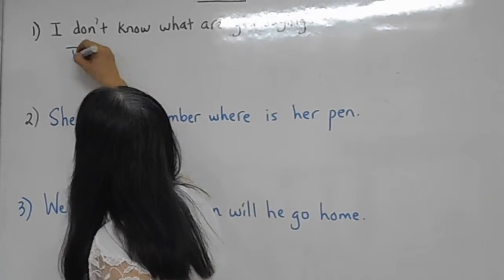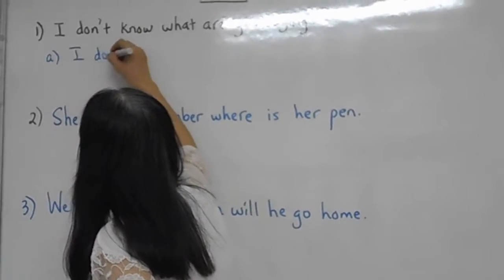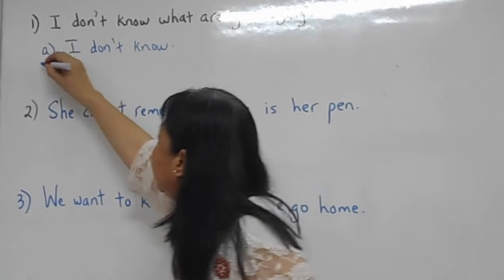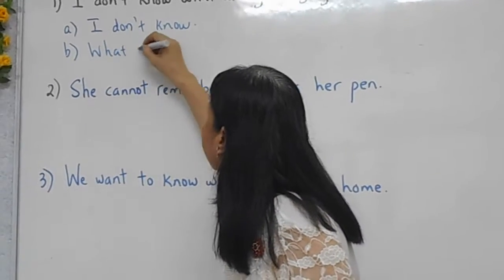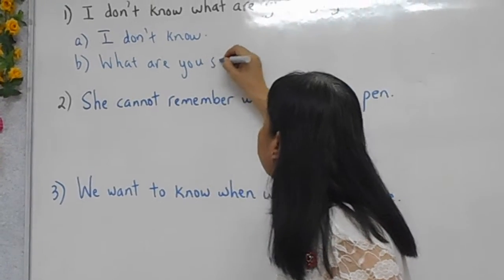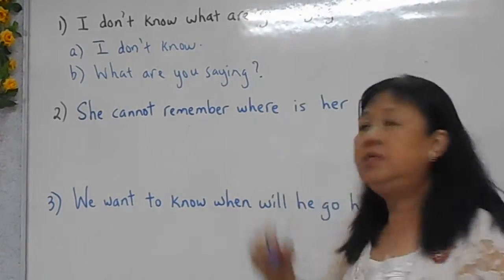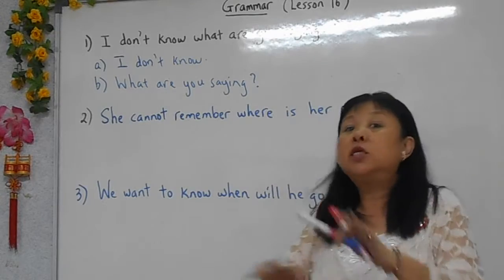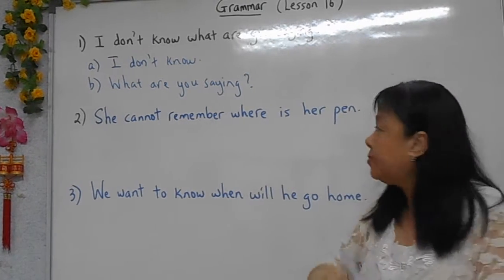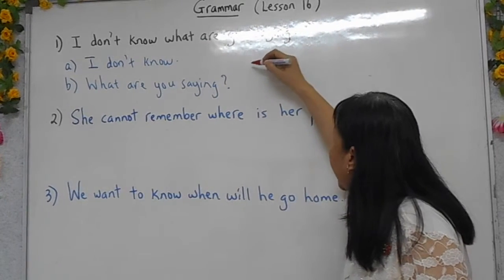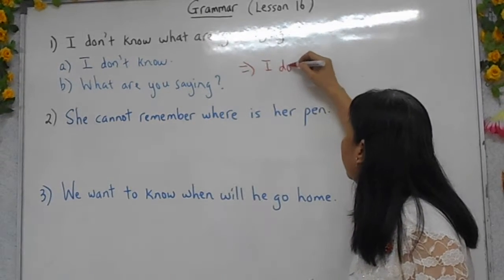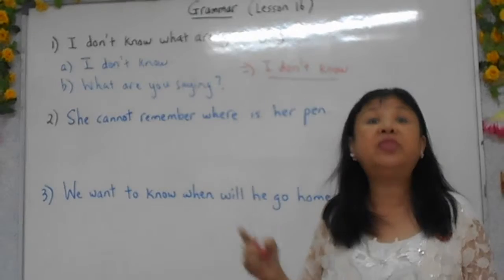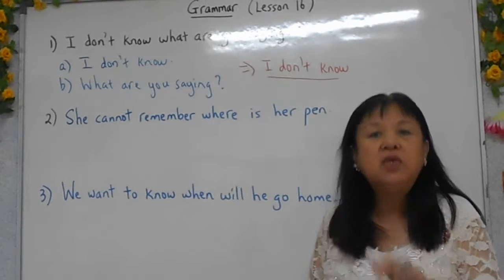The first sentence is: 'I don't know.' This is the first sentence. And the second sentence is: 'What are you saying?' This is a question. When we combine these two into one, it is a totally different structure. When the answer should be 'I don't know,' I'm actually starting with a statement, not a question.